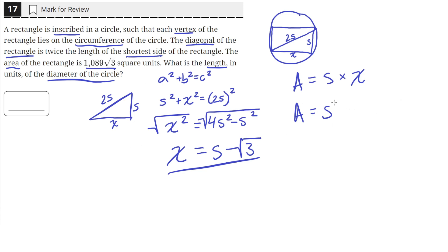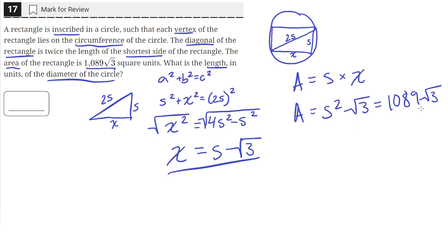So we can rewrite this: the area is s squared times the square root of 3 — that's just s times s times the square root of 3. And we know that this is equal to 1089 times the square root of 3. So we can divide both sides by the square root of 3, leaving s squared equals 1089.